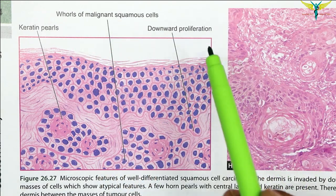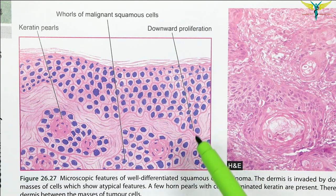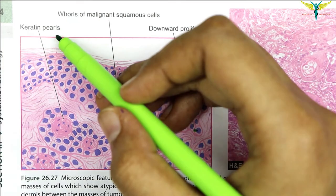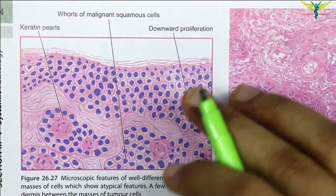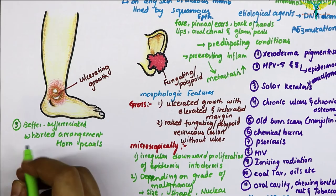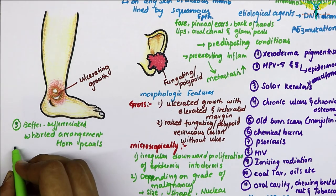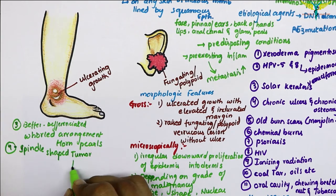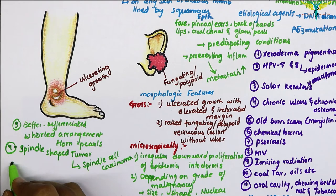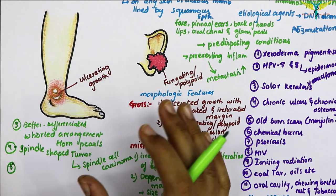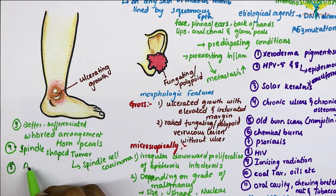Better differentiated squamous cell carcinomas show whorl arrangements and form horn pearls — these are keratin pearls composed of whorls of malignant squamous cells — and the dermis is invaded by downward proliferation of epidermal cell masses. Higher grade squamous cell carcinomas have fewer or no horn pearls and may instead have highly atypical cells. Uncommon variants include spindle-shaped tumors, called spindle cell carcinoma.